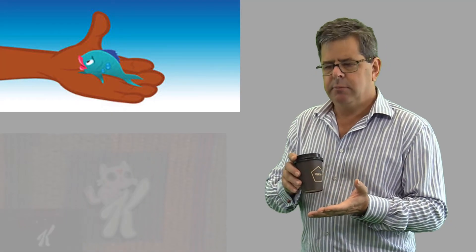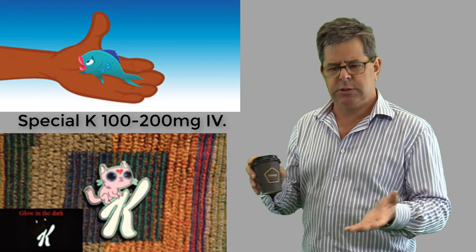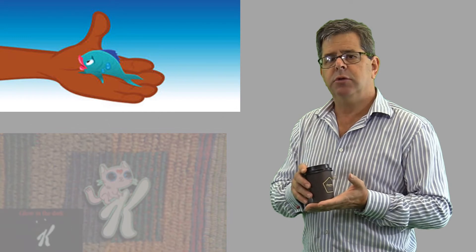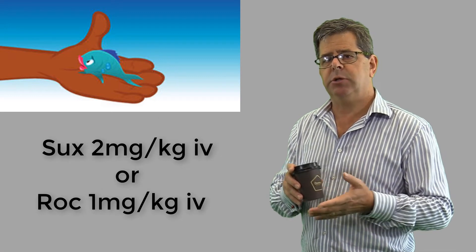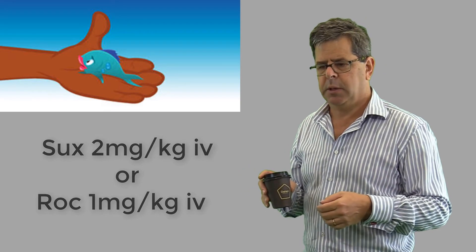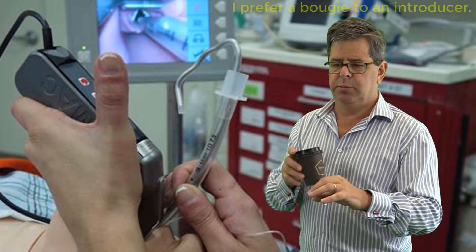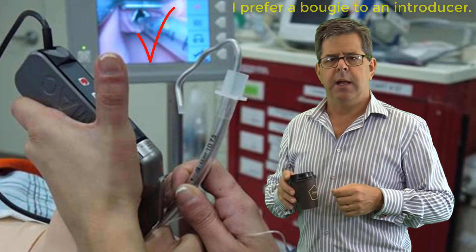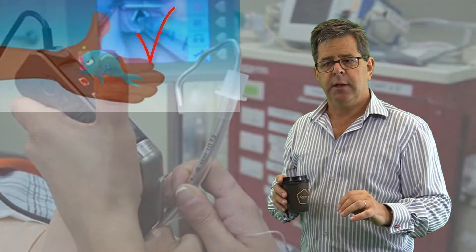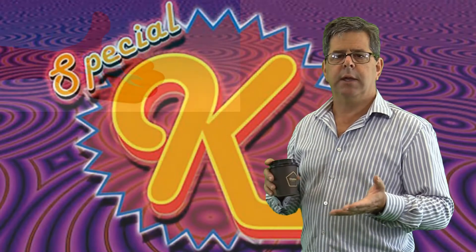What are you going to use for induction? Ketamine. I'd give, for an adult, 200 milligrams intravenously, and then use either suxamethonium to paralyze them at 2 milligrams per kilogram IV, or rocuronium 1 milligram per kilogram IV. Intubate them with a large intratracheal tube using a bougie, using a C-MAC, and then once you've done that, paralyze them and sedate them with a ketamine infusion.